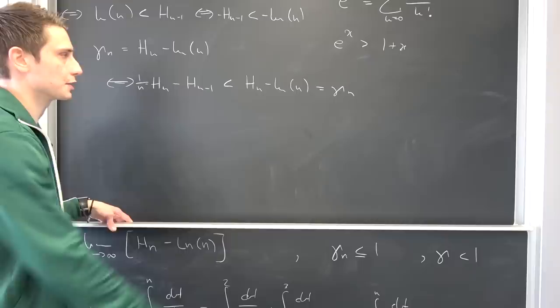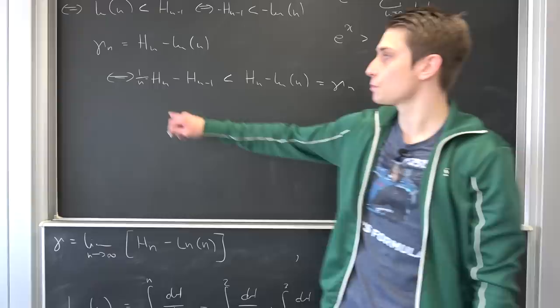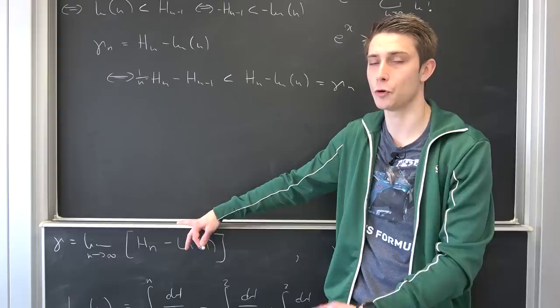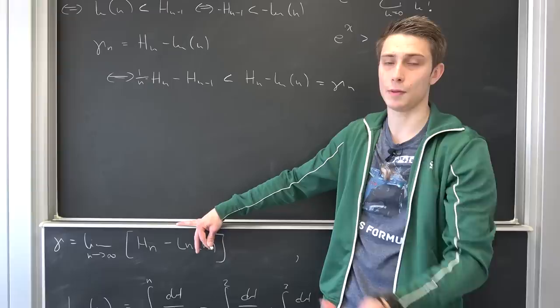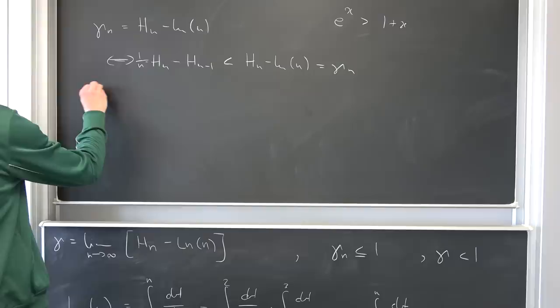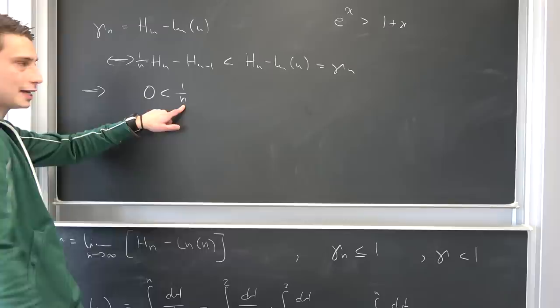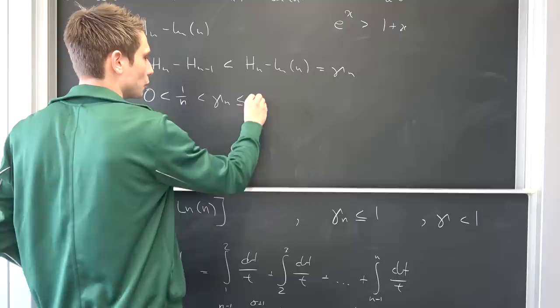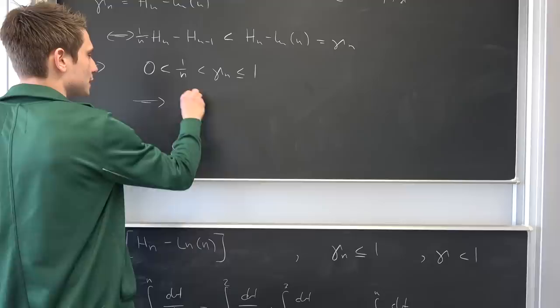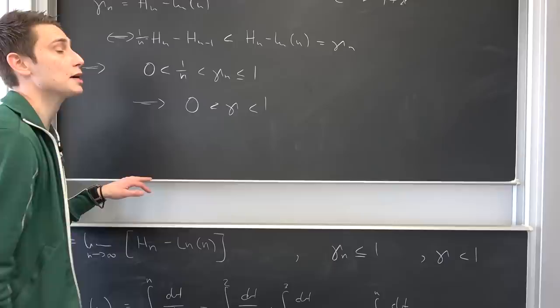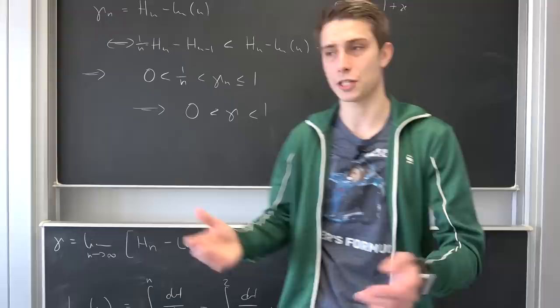So we have 0 < 1/n < γ_n, since n is a natural number (starting at 1) so 1/n > 0 always. And γ_n ≤ 1. So in the limit as n → ∞, our gamma is strictly bounded between 0 and 1, and gamma is something like 0.577 — a nice irrational number.